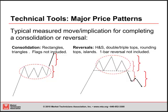Here are a couple of quick examples. For continuation patterns — rectangles, triangles, those types of patterns — we see a move into the continuation pattern, and once you break out, the magnitude that marks the high and low of the pattern is typically the implied move once you've broken out. Flags are excluded from this, which we'll address shortly. For reversals — head and shoulders, double or triple tops, rounded tops, islands — you've got the reversal pattern with its larger magnitude, you get a break, and then you get a completion of that magnitude just on the other side of the break.